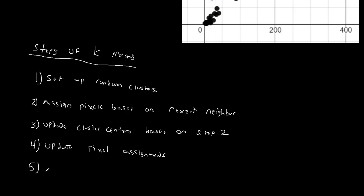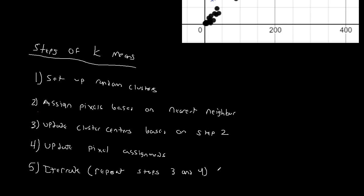Step five: we iterate. Iterate simply means repeat steps three and four until done. So we keep updating the cluster centers, updating the pixel assignments, updating the cluster centers, updating the pixel assignments — that's what iterate means.